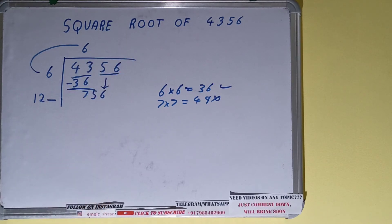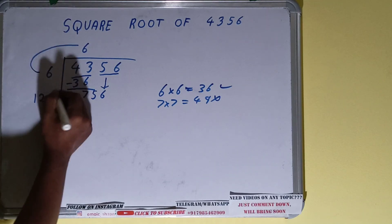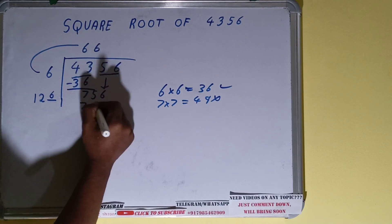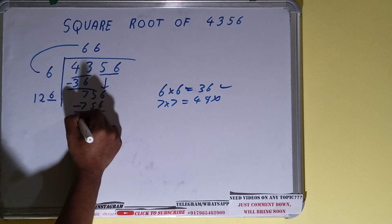Now the rule is whatever number we place here, we have to place it here as well. And 126 times 6 is 756. So we can use 6, and on subtracting we'll get the remainder zero.